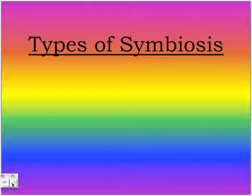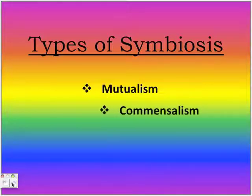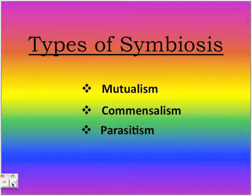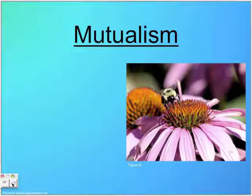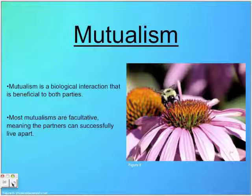Types of symbiosis: Mutualism, Commensalism, and Parasitism. Mutualism is a biological interaction that is beneficial to both parties.